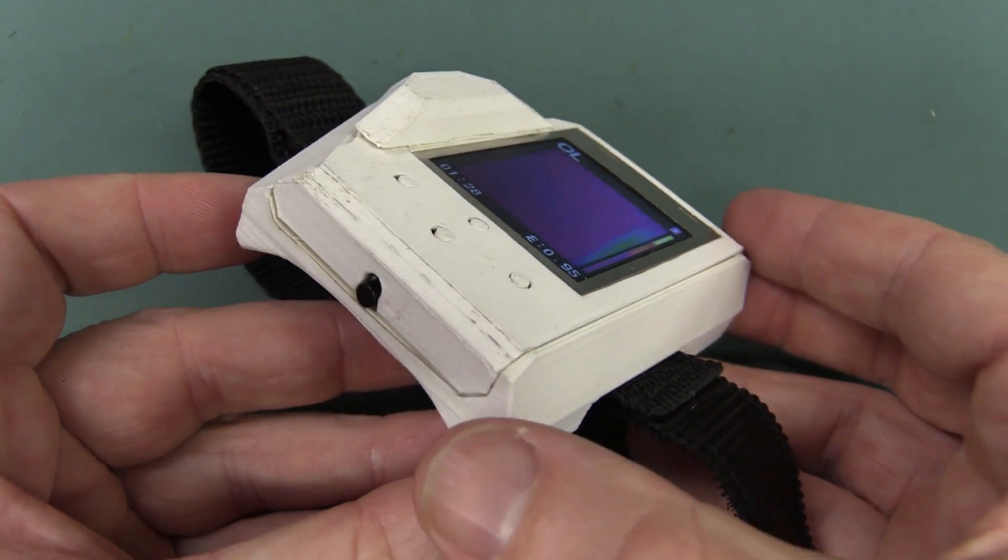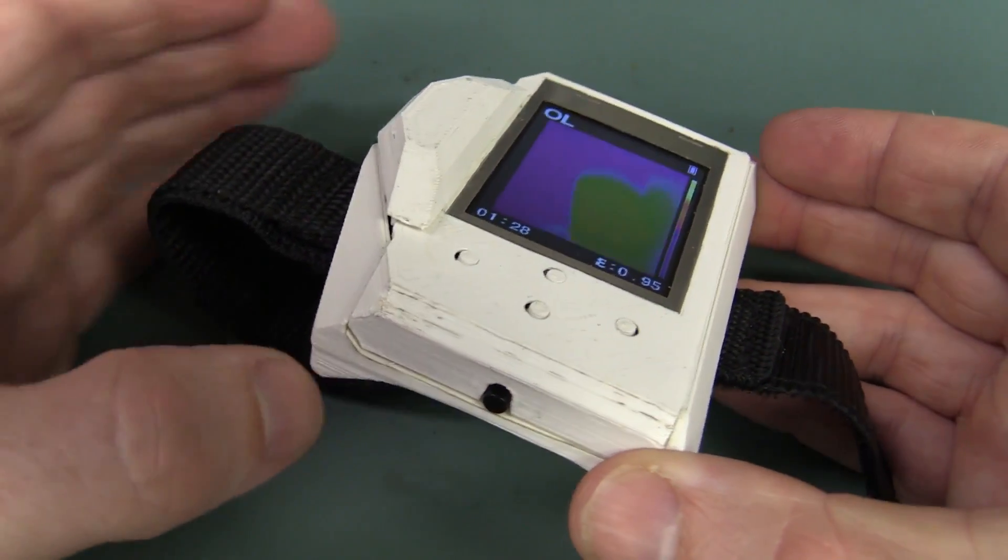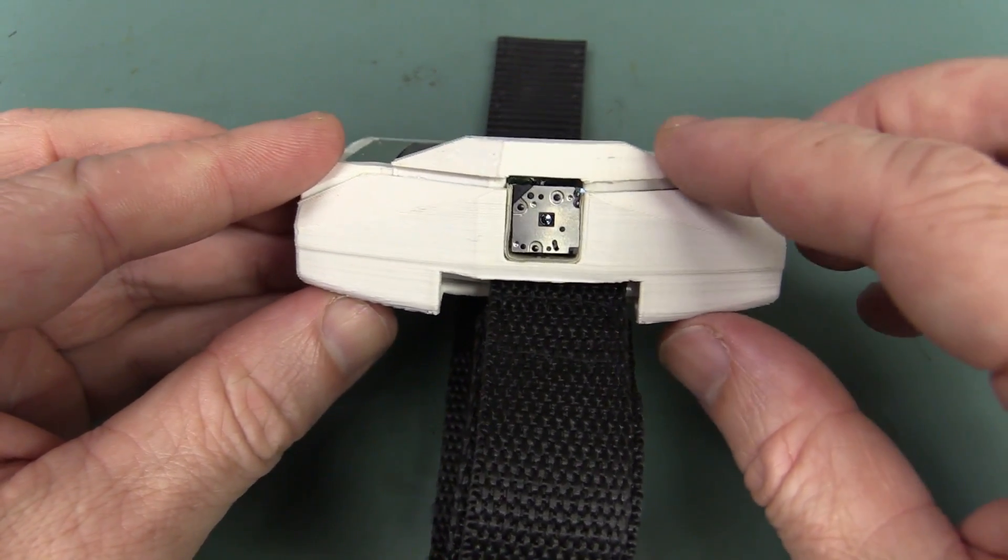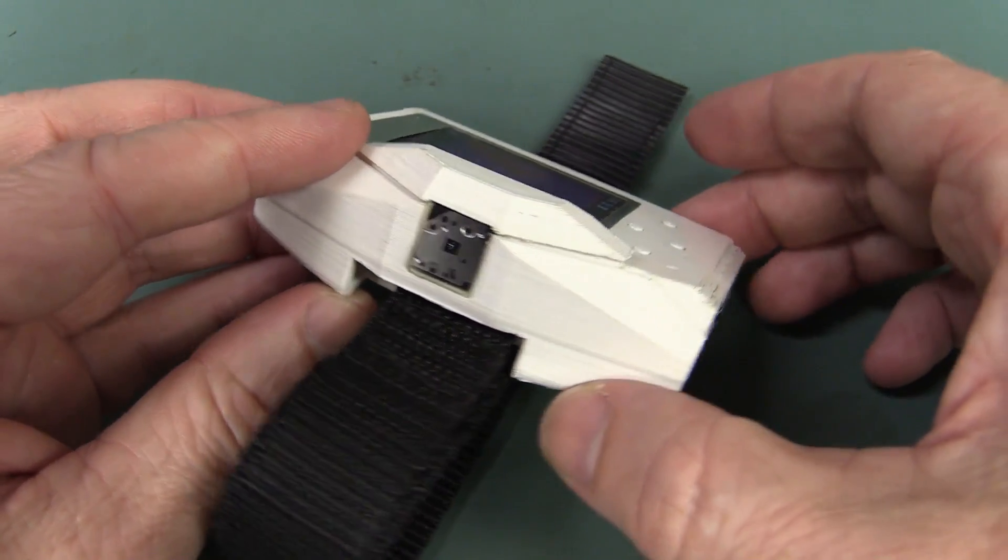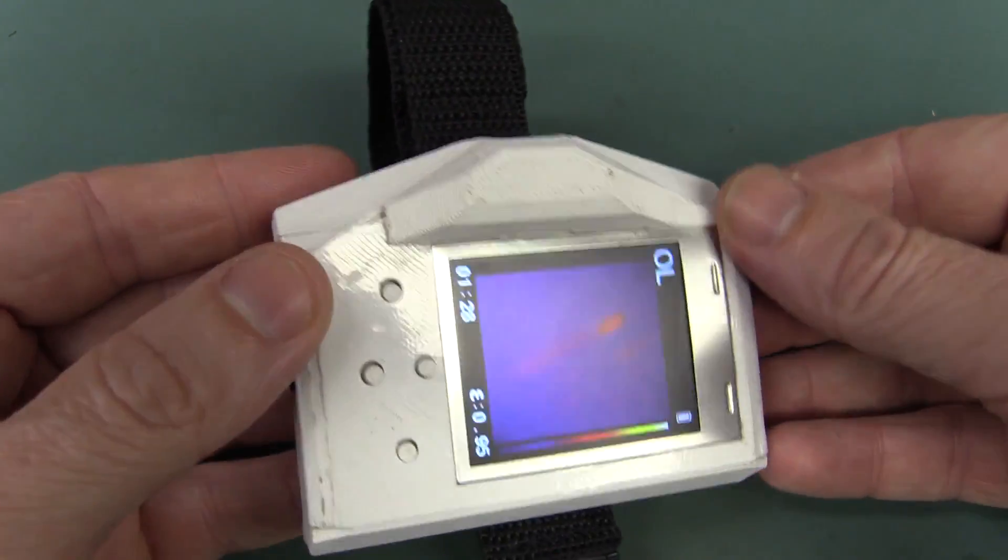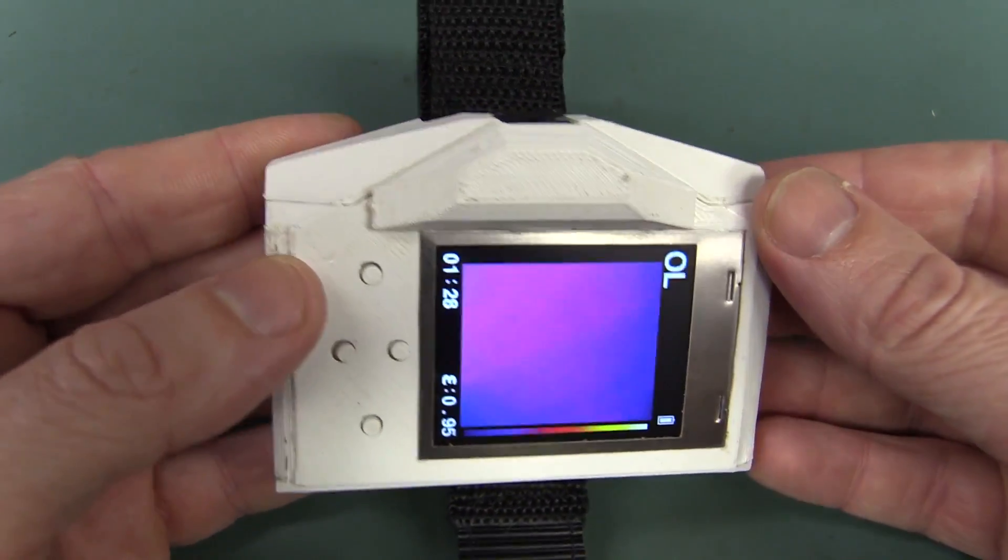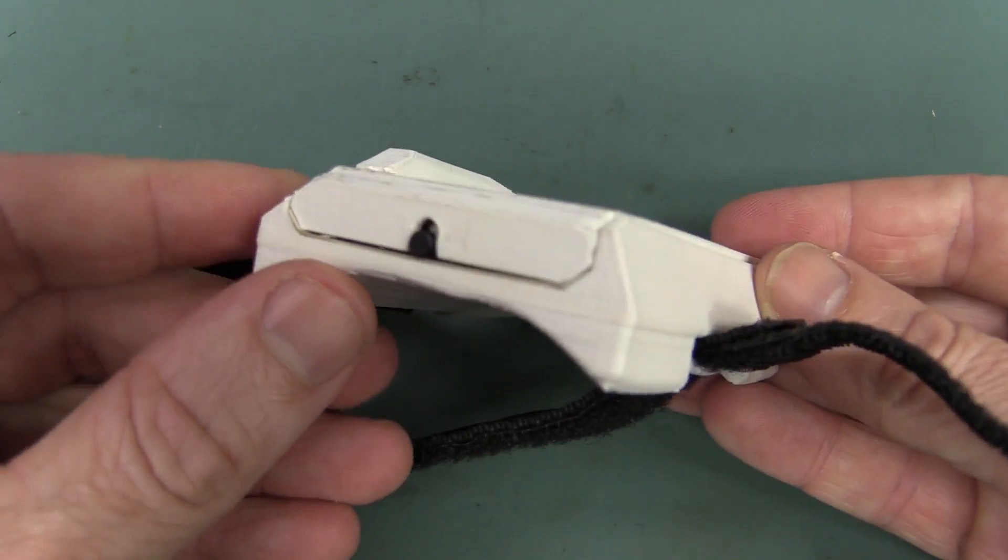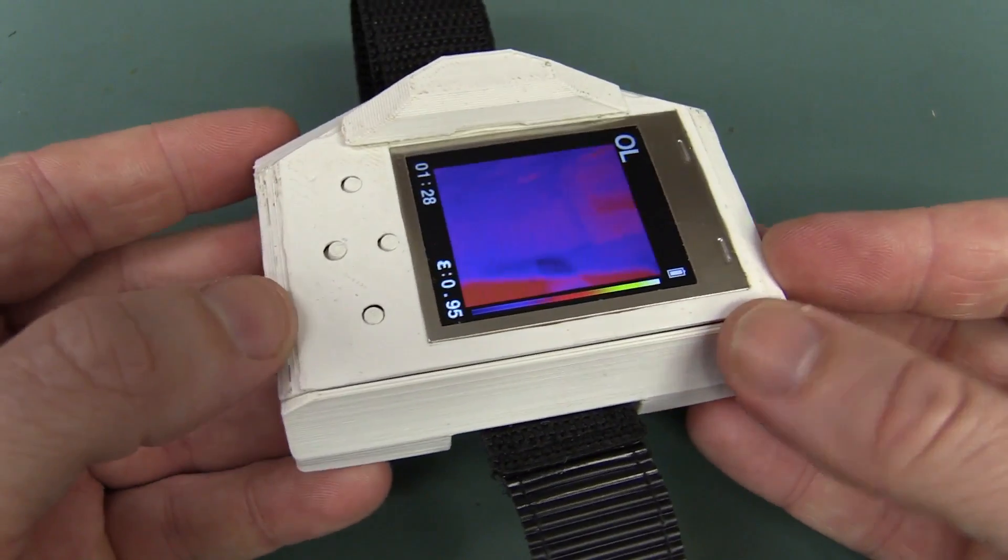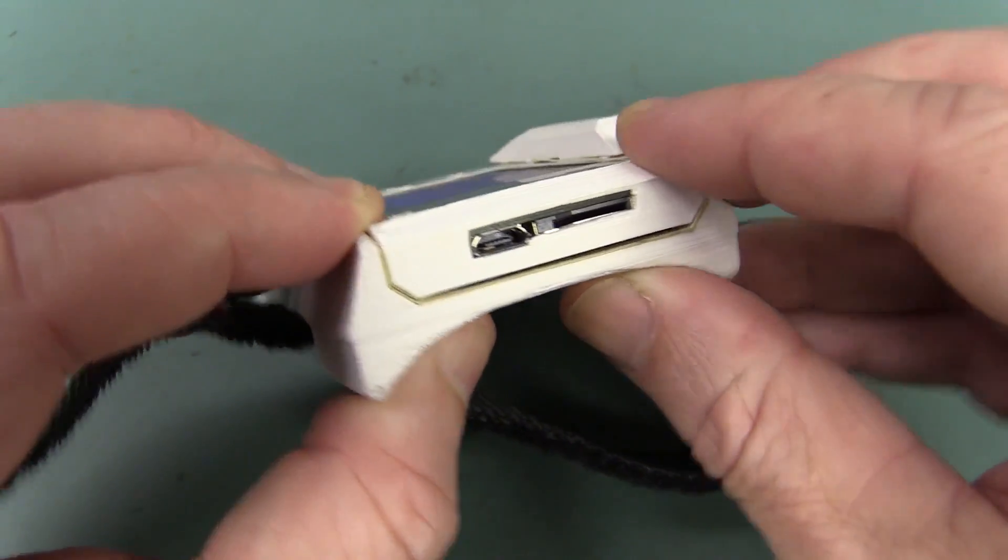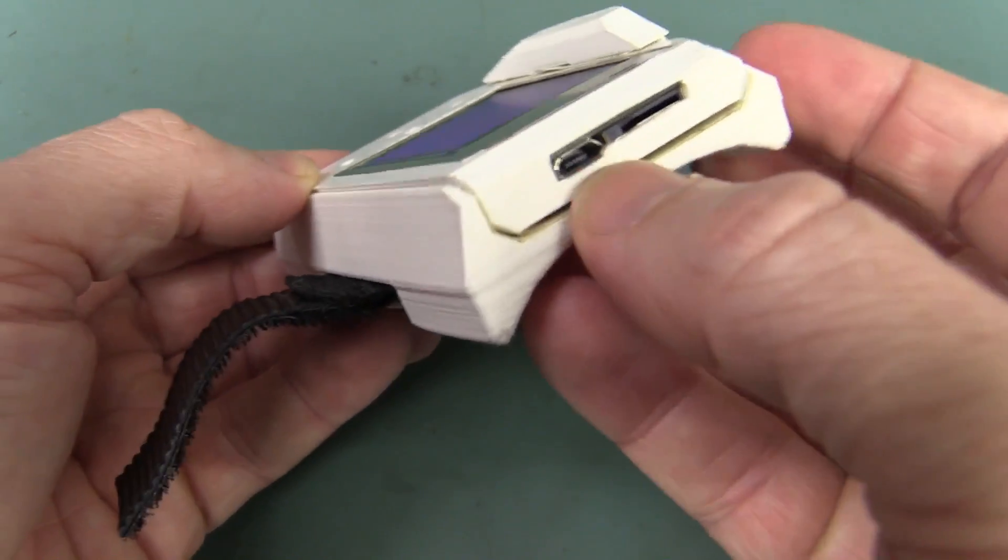So here it is. Uses all the guts out of the FLIR TG165 including the Lepton sensor there in the front. Please excuse the crudity of this 3D printed model. It's not actually stuck together because I'm going to show you the insides in a minute. This is our first shot at printing a 3D case for it. We got it first go and we'll show you some of that in a minute. It uses the existing board.